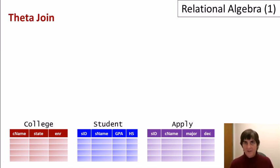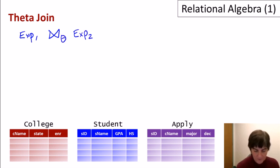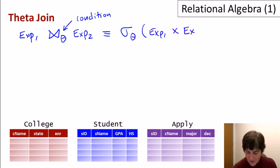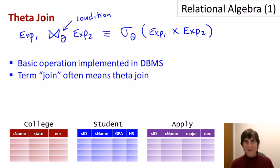The last operator in this video is the theta join. Like natural join, it is an abbreviation that doesn't add expressive power. The theta join is written with the bow-tie operator with a subscript condition theta, and it is equivalent to applying that condition to the cross product of the two expressions: E1 ⋈_θ E2 = sigma_θ(E1 × E2). Most database management systems implement the theta join as their basic operation for combining relations — when practitioners say 'join,' they typically mean theta join.